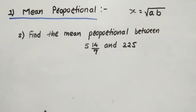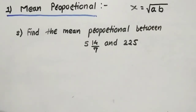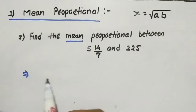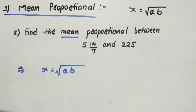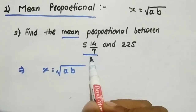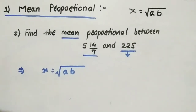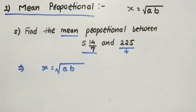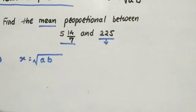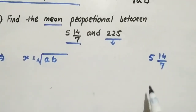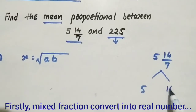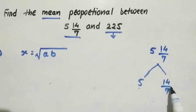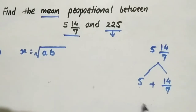Example number five: find the mean proportional between 5 and 14/7 and 225. Again we need to find the mean, so x equals square root of a times b. The first number is a mixed fraction 5 and 14/7. We need to convert this mixed fraction: 14 divided by 7 equals 2, so 5 plus 2 equals 7. So the first number converts to 7.